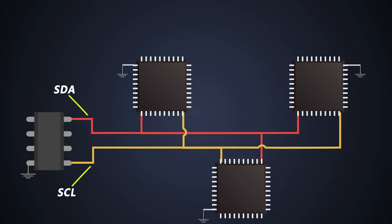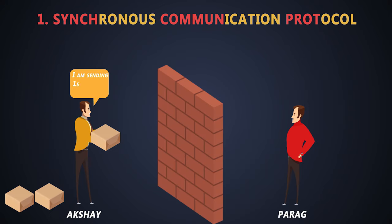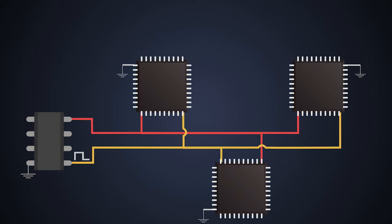The SDA line sends the data to other devices and SCL is responsible for synchronization. If we look at the analogy of synchronous communication, Akshay was throwing boxes towards Parag. While throwing every box, he used to notify Parag that he threw the boxes to get the synchronization between both of them. And that's how a clock signal on the clock line works.